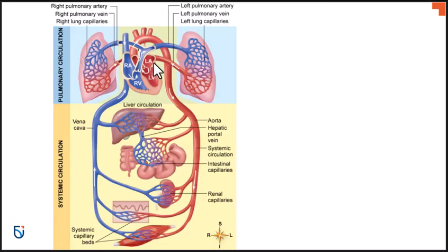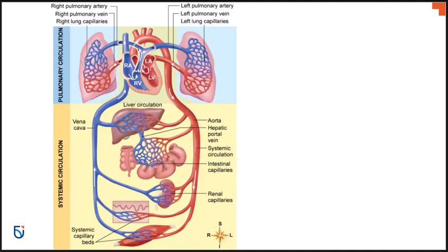We have two different systems in the cardiovascular system: pulmonary circulation and systemic circulation. Pulmonary refers to the lungs — it is the system going to and from the lungs, so it is under lower pressure than the systemic circulation, which goes to and from the heart throughout the entire body. We also have a portal system where blood flows through the systemic circulation but passes through two consecutive capillary beds — that's in our GI tract.